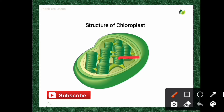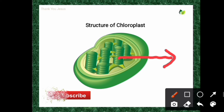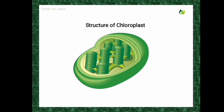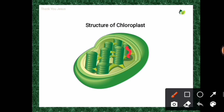Within the matrix there are many closed, flattened sacs called thylakoids. Each thylakoid is bounded by a single unit membrane and encloses a cavity called the loculus. Nearly 10 to 100 thylakoids are arranged one above the other in the form of a stack of discs, and this stack is called a granum.